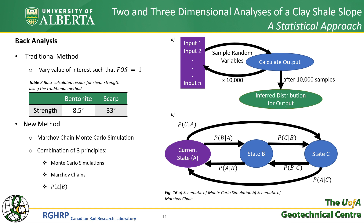In essence, this simulation combines three principles: Monte Carlo simulations, Markov chains, and the Bayesian principle of conditional probability — that is, what is the probability of A given B? A Monte Carlo simulation is a method to sample from an unknown distribution, where you select random values from input parameters according to their distributions and calculate the output, repeating this a number of times to approximate a distribution for your output. A Markov chain is quite simple — the probability of going to any state depends on the current state you are in, and the number of possible states is ultimately unlimited.